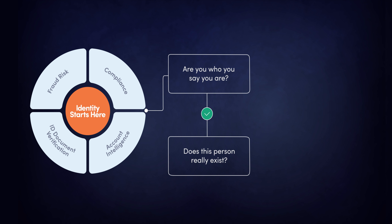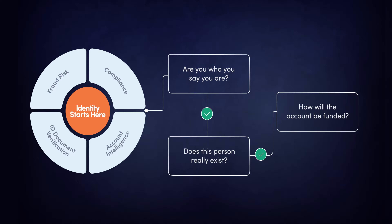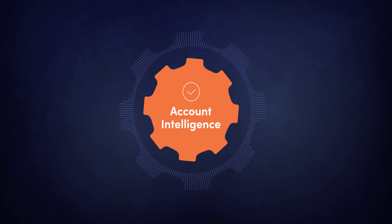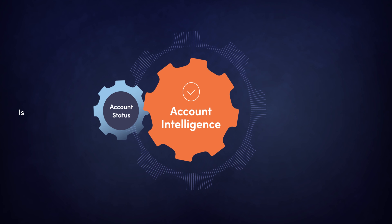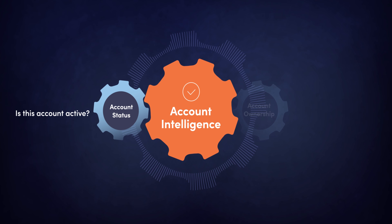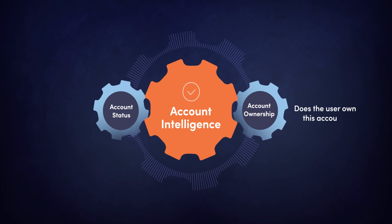As soon as we help our customers establish that they want to open an account with an individual, the next thing they need to do is understand how that individual will fund the account. Funding is typically done over an ACH transaction, but knowing who's at the other end of that ACH is difficult. The account intelligence solution is going to answer whether that ACH account connecting to our customer's account is actually open and active.